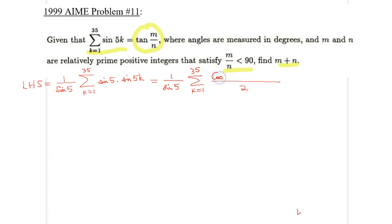Cosine the difference first. In this case, 5 minus 5k or 5k minus 5 wouldn't matter because of the properties of the cosine function. So, 5k minus 5 minus, and this time it will be the sum. So, 5k plus 5.